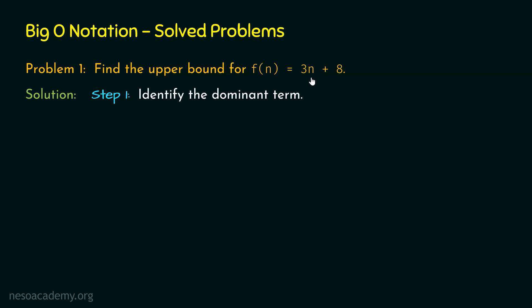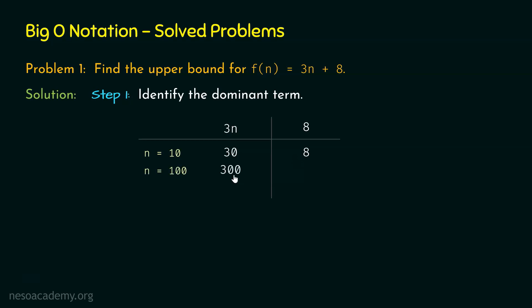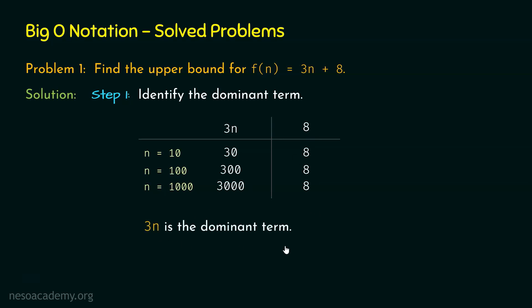To prove this, let's draw a table for 3n and 8 and plug in values of n one by one. If n equals 10, then 3n becomes 30, but 8 remains 8. If n equals 100, then 3n becomes 300, but 8 remains 8. We can observe that 3n increases with n while 8 remains 8 throughout. Clearly, 3n is the dominant term, and we have identified it in this expression.